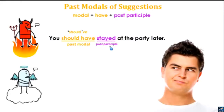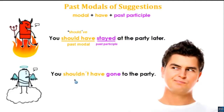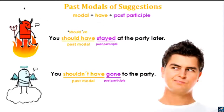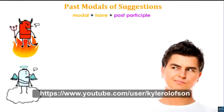From the other side of his personality: 'You shouldn't have gone to the party.' Here's the past modal in the negative — just add 'n't' to make it negative. 'You shouldn't have gone to the party.' The past participle is 'gone.' So we use 'should have' and 'shouldn't have' to give suggestions about something in the past.